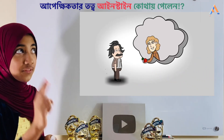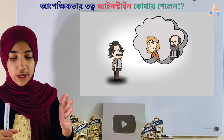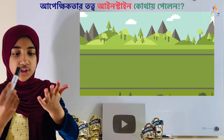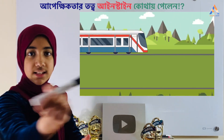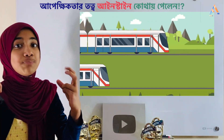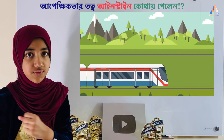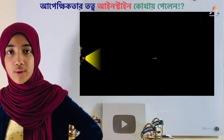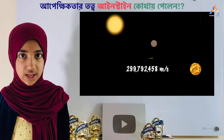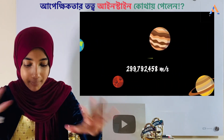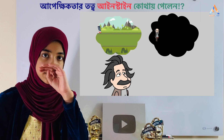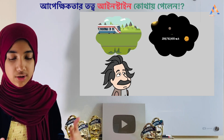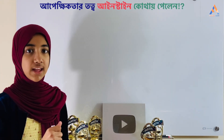Einstein was a big fan of two of the greatest scientists: Maxwell and Newton. Newton's theory says that from the observer's frame of reference, velocity is different relative to the observer. But Maxwell proved that for any electromagnetic wave, the velocity is constant no matter where the frame of reference is. Einstein saw that these two things totally clashed.